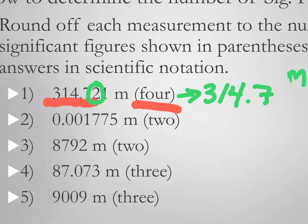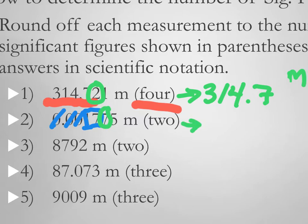The second number, 0.001775 meters, rounded to two significant figures: the leading zeros are not significant, so you have one and two significant figures at '17.' The next digit is a seven — above five — so you round up, giving 0.0018 meters.